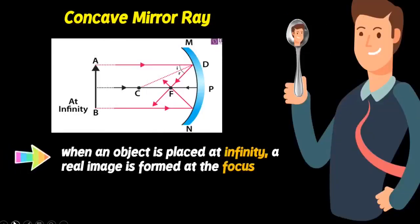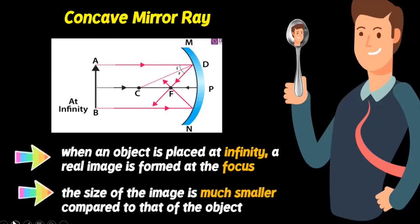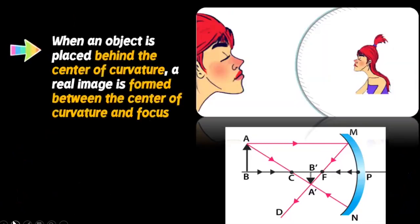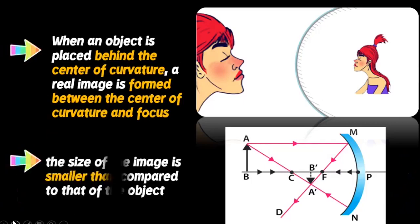When an object is placed at infinity, a real image is formed at the focus. The size of the image is much smaller compared to that of the object. When an object is placed beyond the center of curvature, a real image is formed between the center of curvature and the focus. The size of the image is smaller than compared to that of the object.